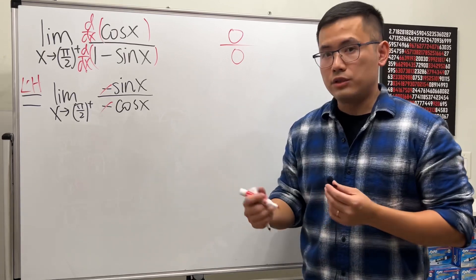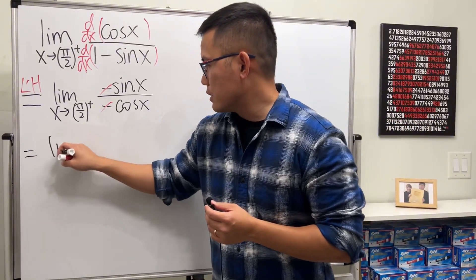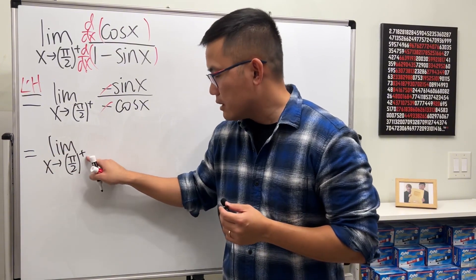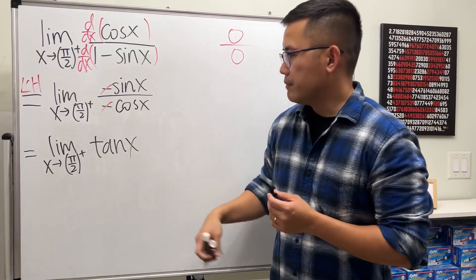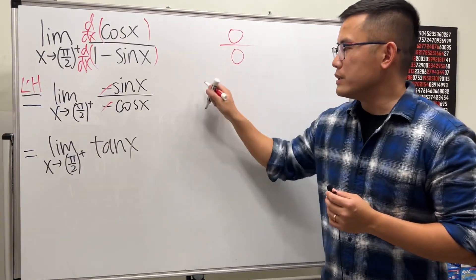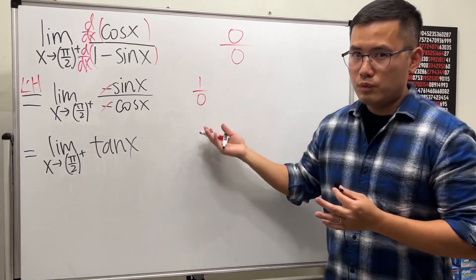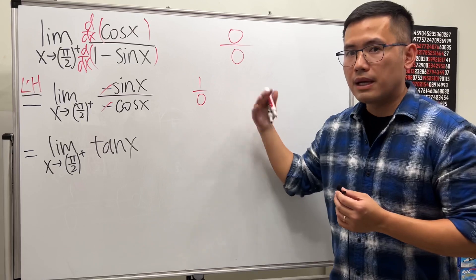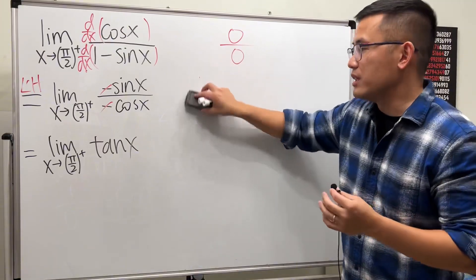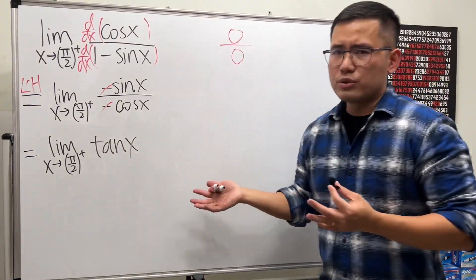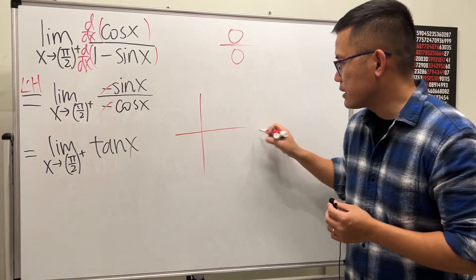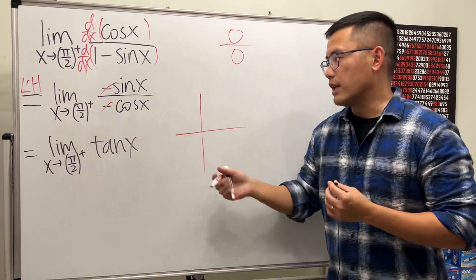The negatives cancel and become positive, so sine x over cosine x is just tangent x. This question now becomes: what is the limit as x approaches π/2 from the right of tangent x? If you plug in π/2, you end up with one over zero — either positive or negative infinity. To determine the sign, think about the graph of tangent x. Let me draw that for you.